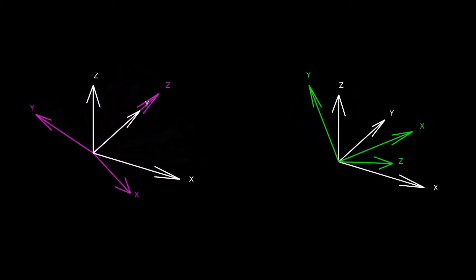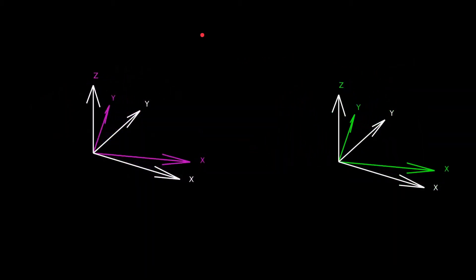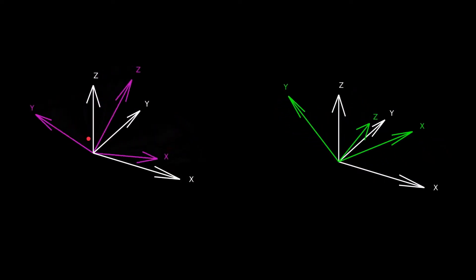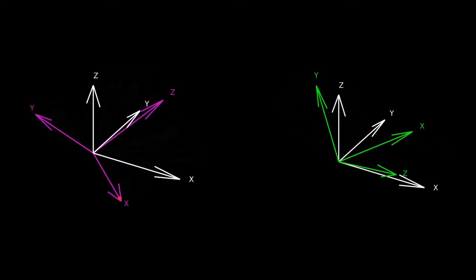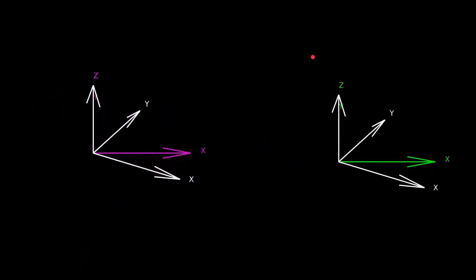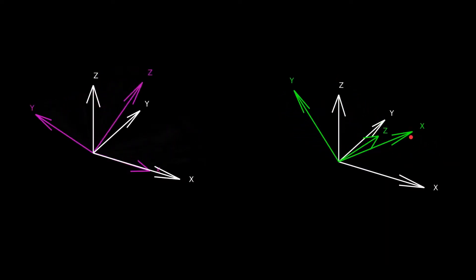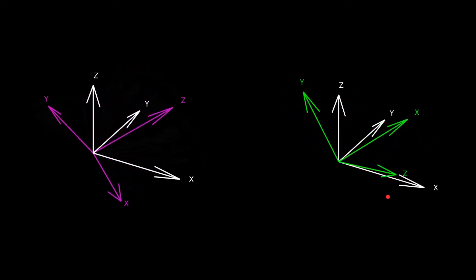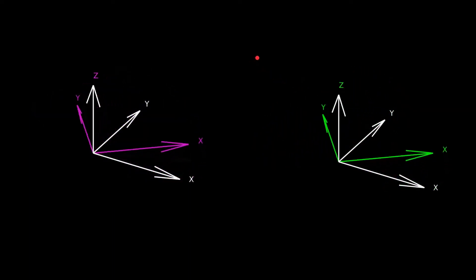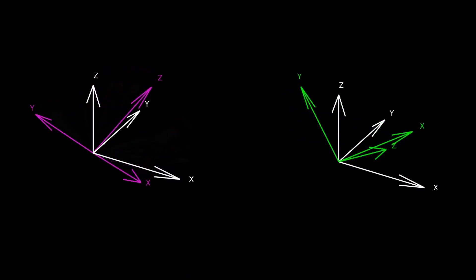The animation on the left is an example of a 3-2-1 sequence, where the first rotation occurs around the body's Z axis, then the next rotation is about the Y axis, and the final rotation is about the X axis. On the right is a 3-1-3 sequence: first rotation about the Z axis, second about the X axis, and the third about the Z axis again. Notice that even though in both cases each rotation is 70 degrees, the frames end up in very different places because of the difference in the sequences.